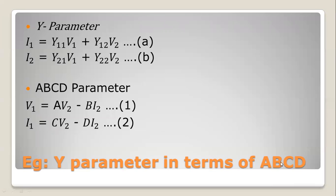This is the Y-parameter in terms of ABCD: Y11, Y12, Y21, Y22. Let's compare how the Y-parameter is expressed in terms of ABCD. We have Y12 in terms of the ABCD elements. Next, I2, V1, and V2 are discussed in terms of ABCD.